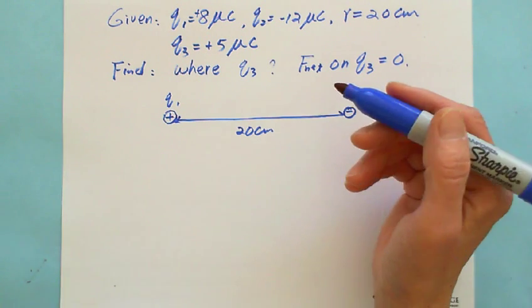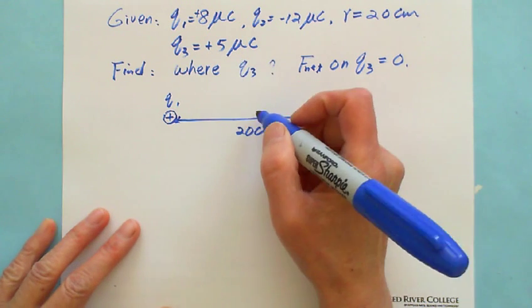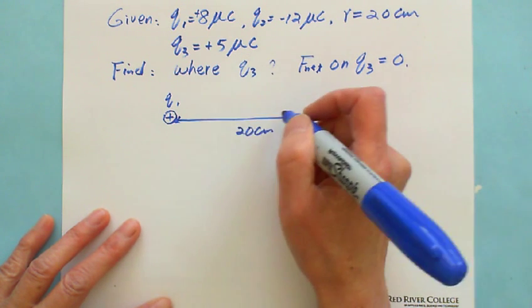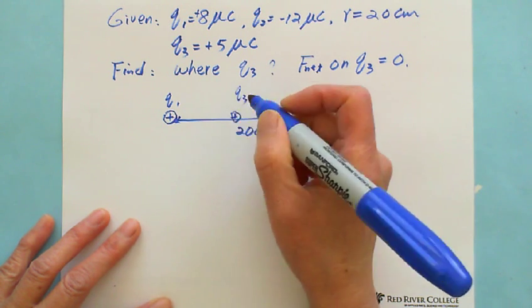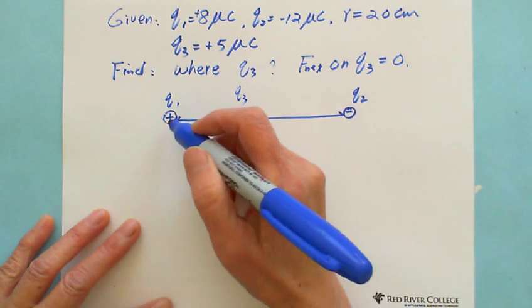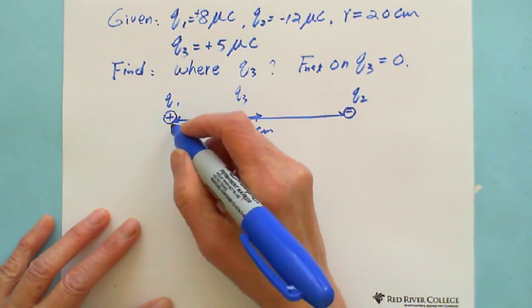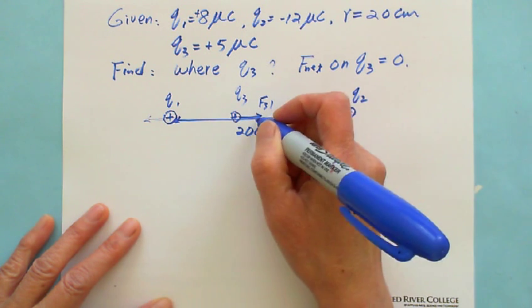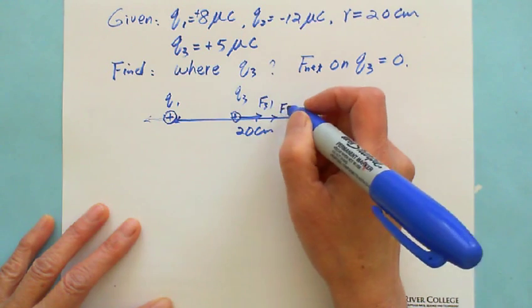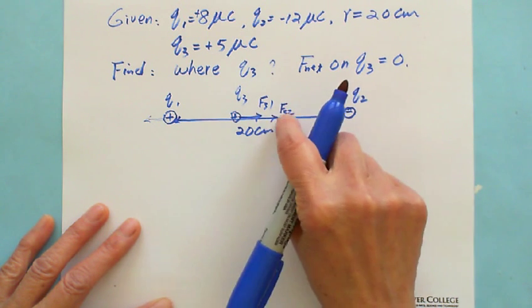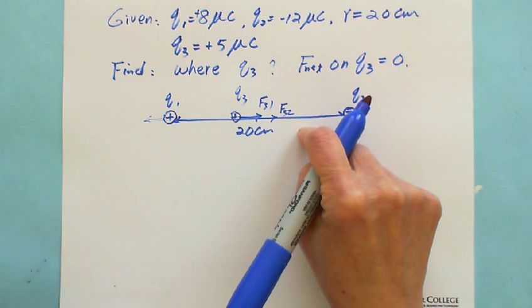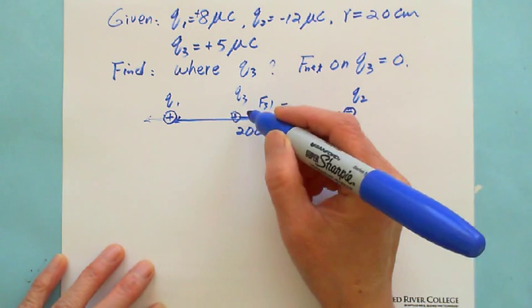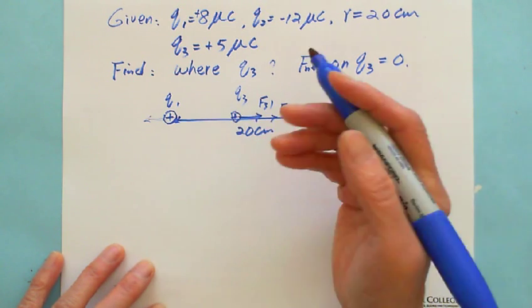From Practice Question 1, we know that if a positive charge is put between Q1 and Q2 — because Q3 is positive — for example if we put Q3 anywhere here, the force from Q1 is going to the right because they repel each other. And because Q2 is negative, they attract each other — this force acts on Q3 from Q2. That's why these two forces are in the same direction — they cannot be balanced. We need to find a place where these two forces are in opposite directions, where one force goes right and the other goes left, so then it's possible to balance.